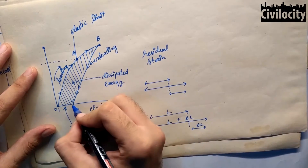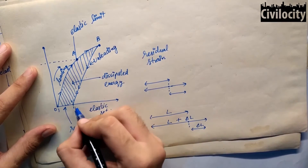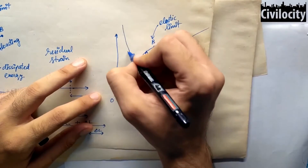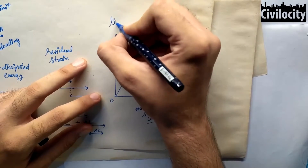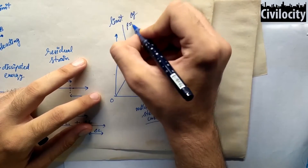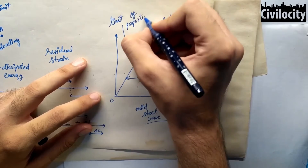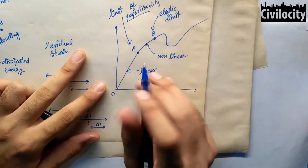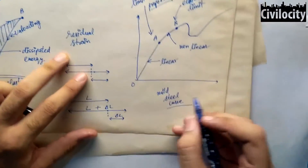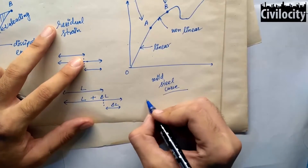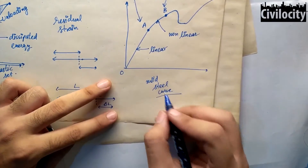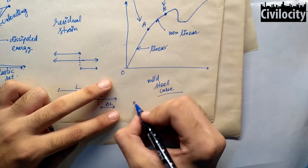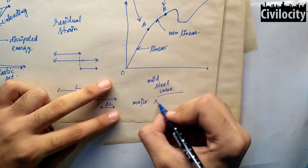If I relate elasticity to the mild steel curve, the O-A path is our linear path, and A-B path is our non-linear path. A was our limit of proportionality, so A to B was our non-linear elastic zone, and A to B was our elastic limit. This is the reason that we use steel in construction.